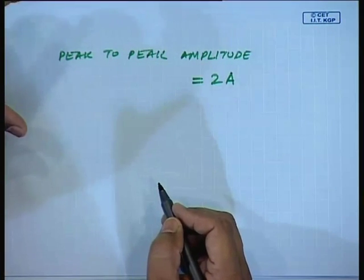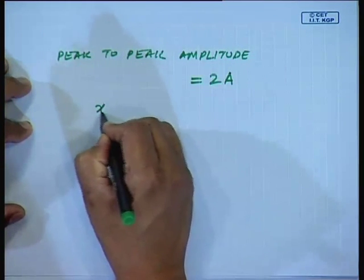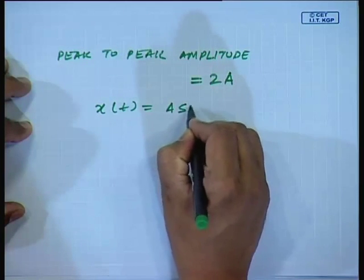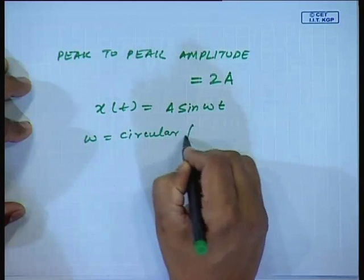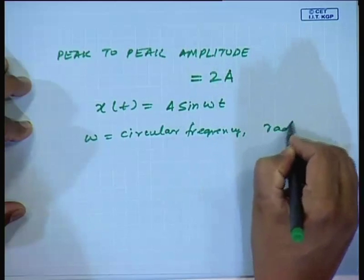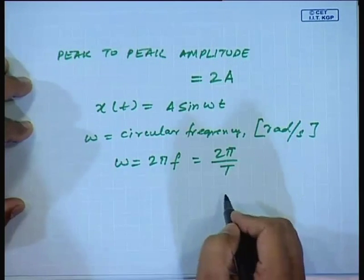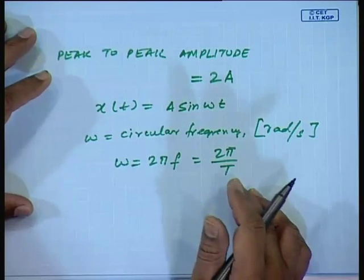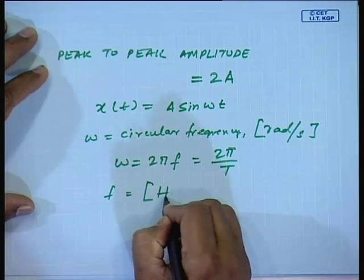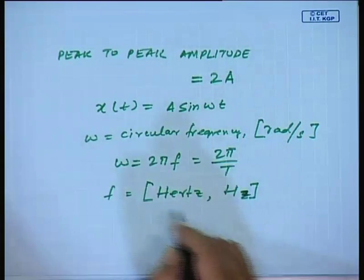I have found out the amplitude and the peak-to-peak amplitude. Now, how is ω related to frequency? ω is the circular frequency, with units of radians per second. ω = 2πf = 2π/T, where T is the time period in seconds. In instruments we sometimes measure in milliseconds or microseconds, so you have to be careful about units. The unit of frequency is hertz, written as Hz.